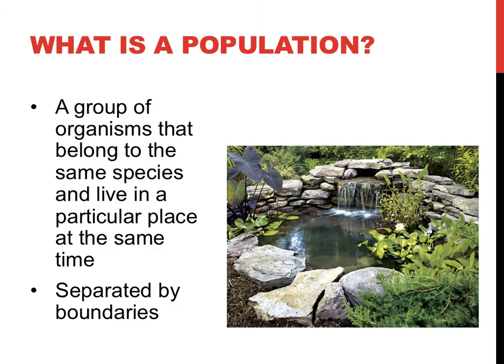A population can be defined as a group of individuals of one particular species that are found in a specific location at one particular time. When it comes to describing a particular population, boundaries — the borders, the limits — of that population must be chosen. Sometimes the boundary of a population can be very simple to define, as shown in the picture of the pond to the right. Since all the fish are confined within the pond, that would make an excellent boundary to describe the population living there.